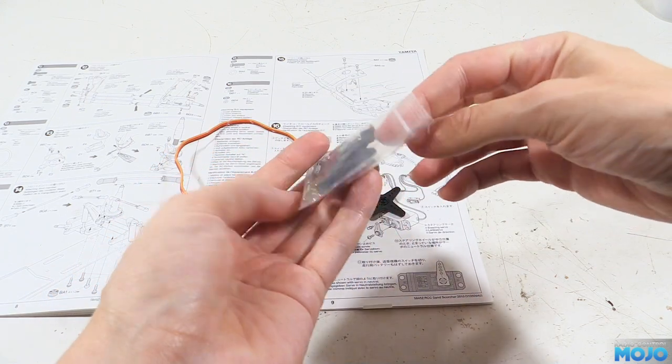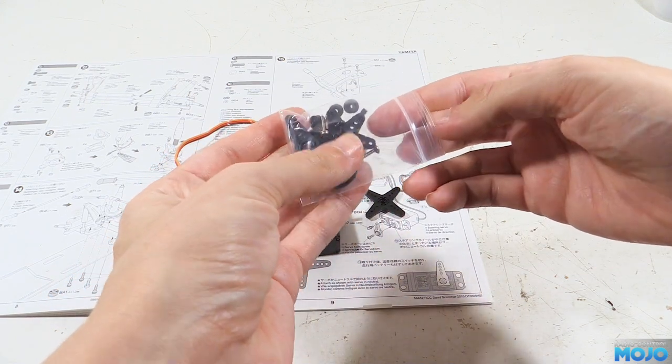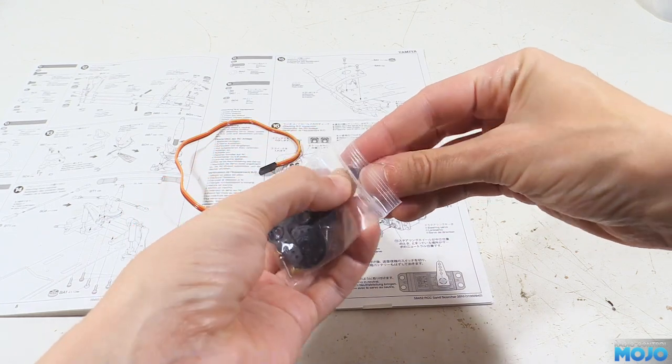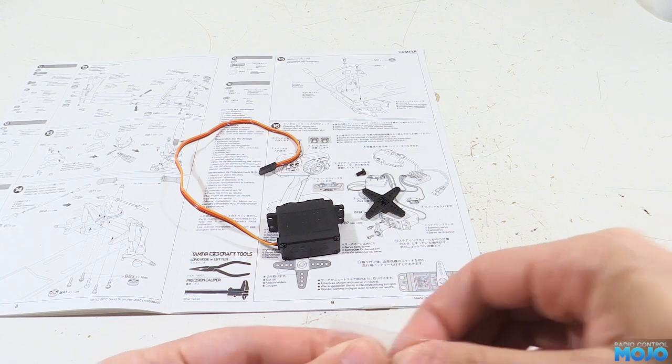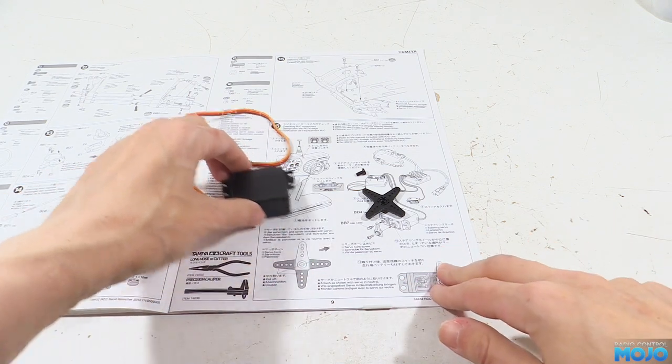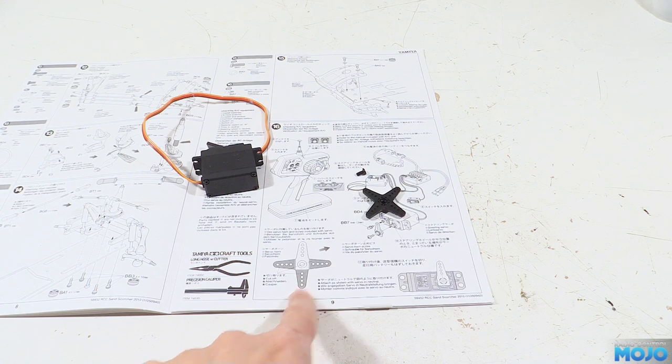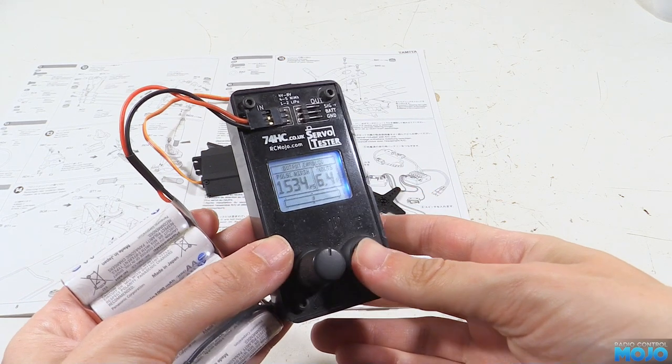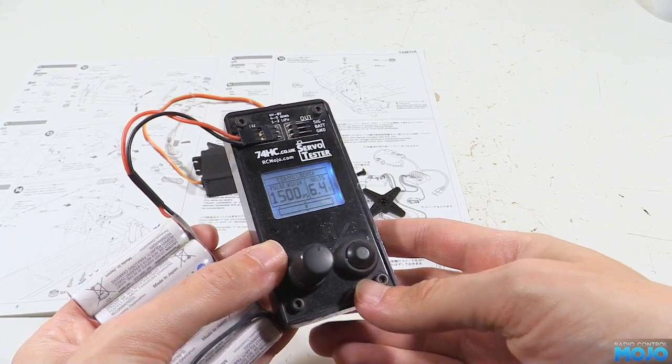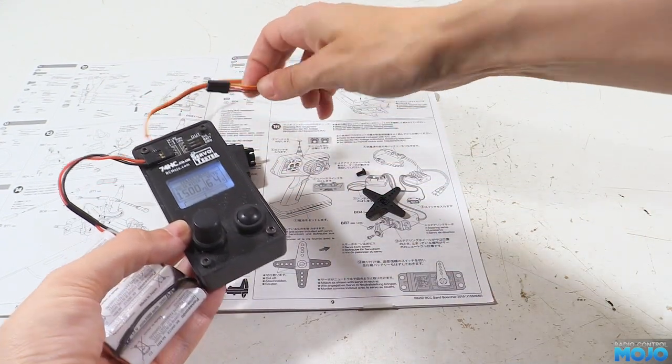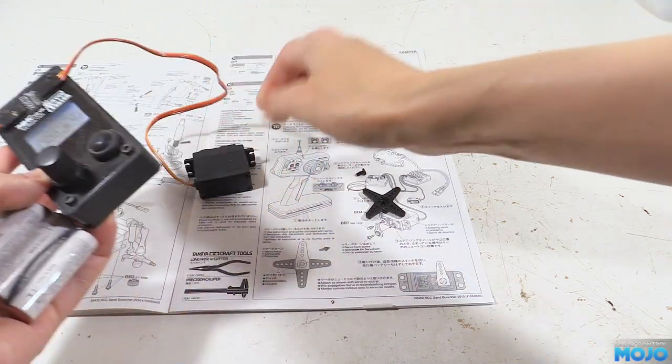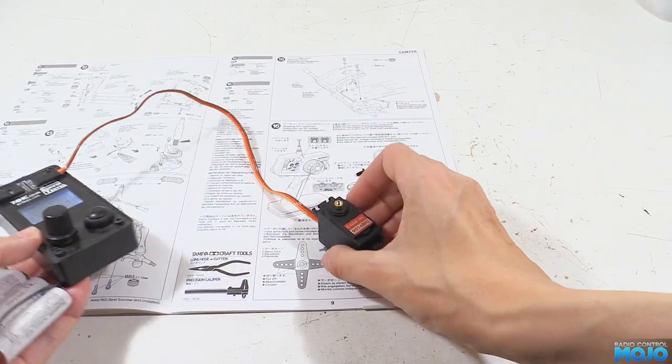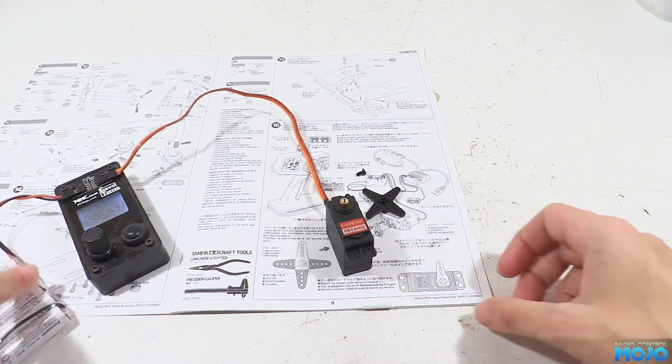From the servo accessory bag, we need the four armed arm and the small screw to attach it. Now, before we attach the arm, we need to power up the servo to make sure it's in the centre. You can follow the manual and hook up all the electronics, but a much quicker way is to use a servo tester. This one's my own design, but some chargers have a servo output or you can get a cheap and cheerful tester from your favourite online RC retailer. Either way, it makes setting up during the build far quicker.